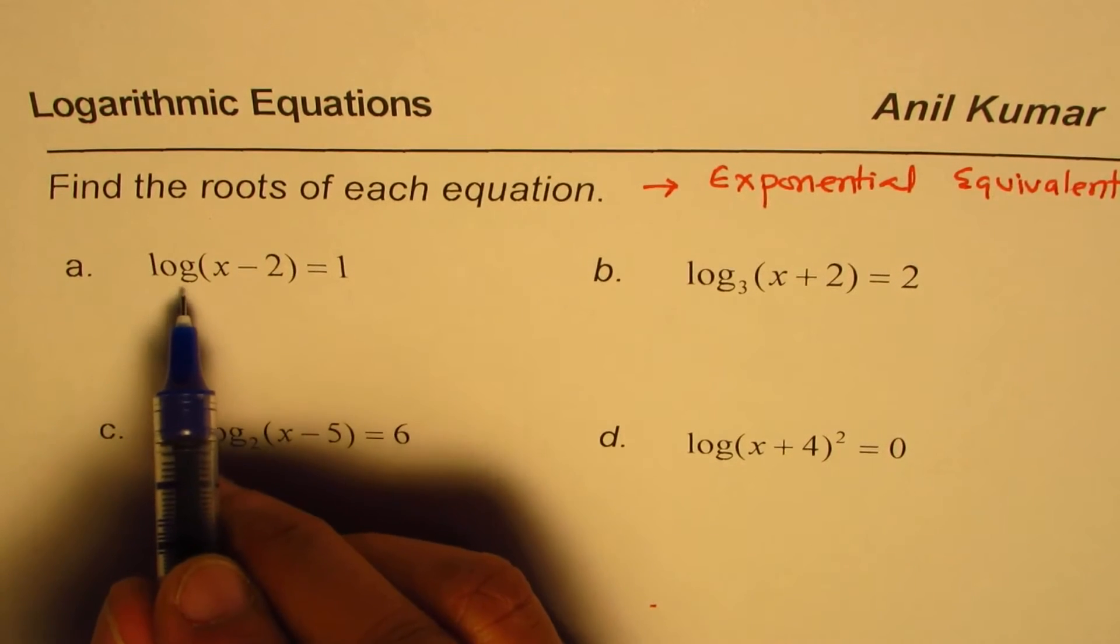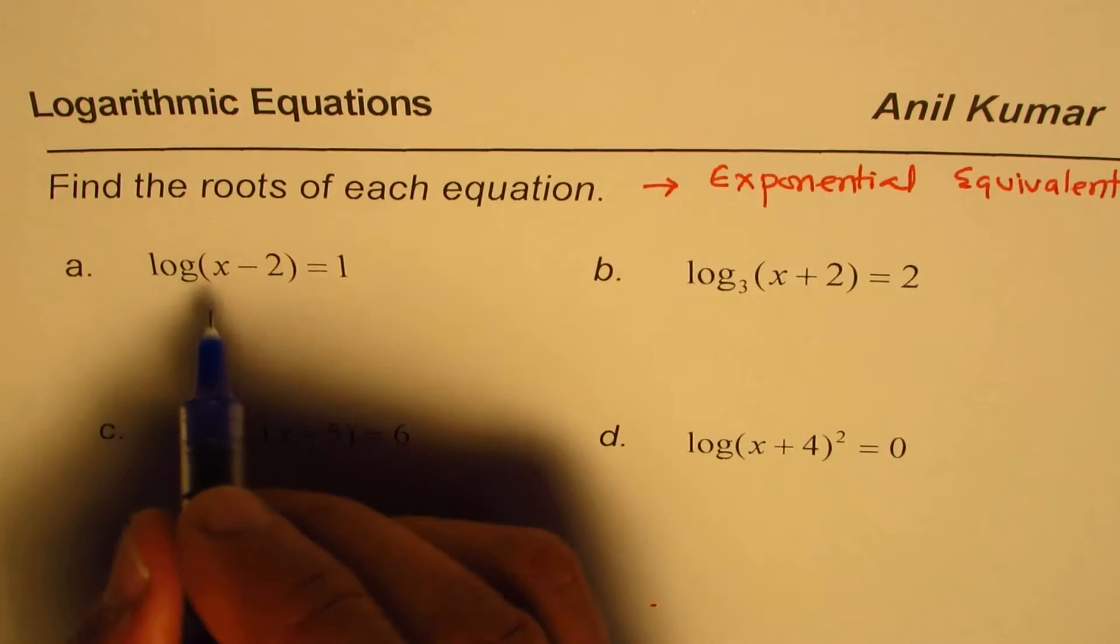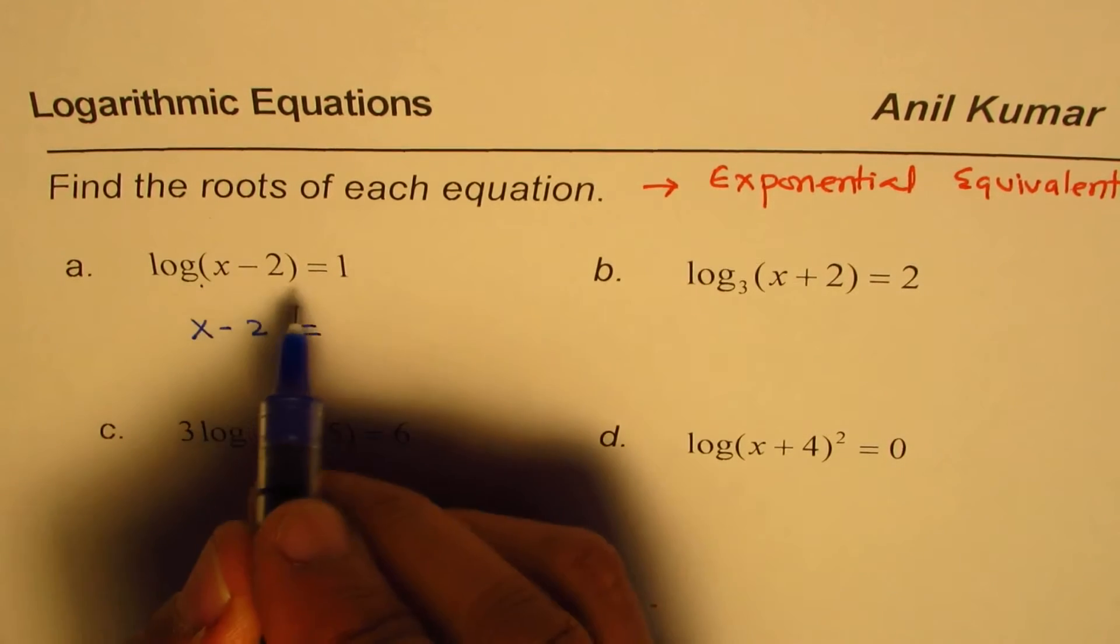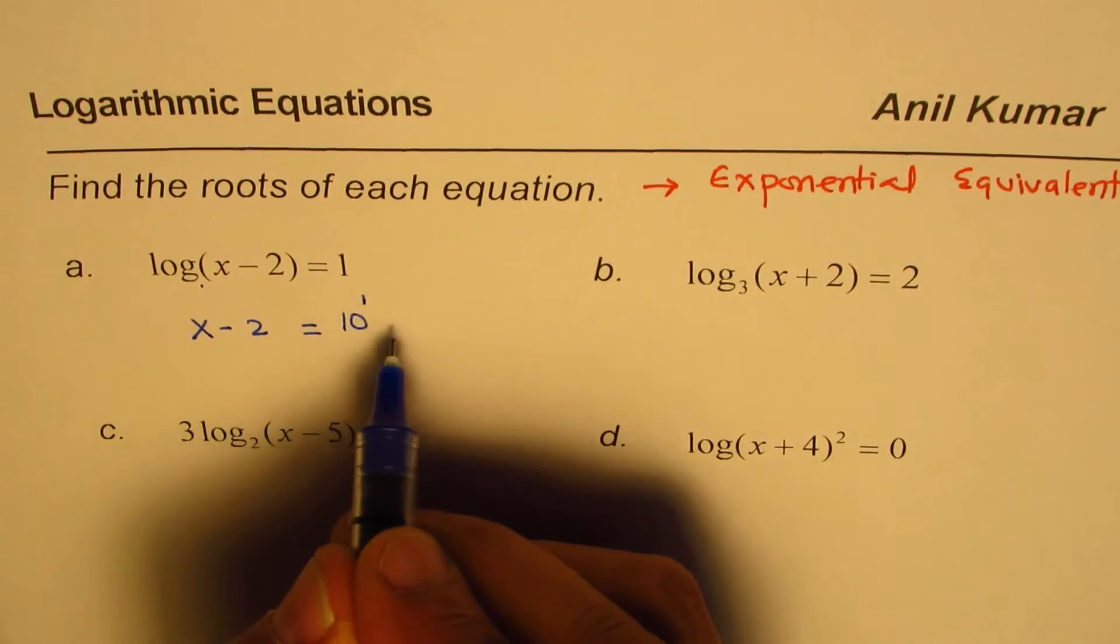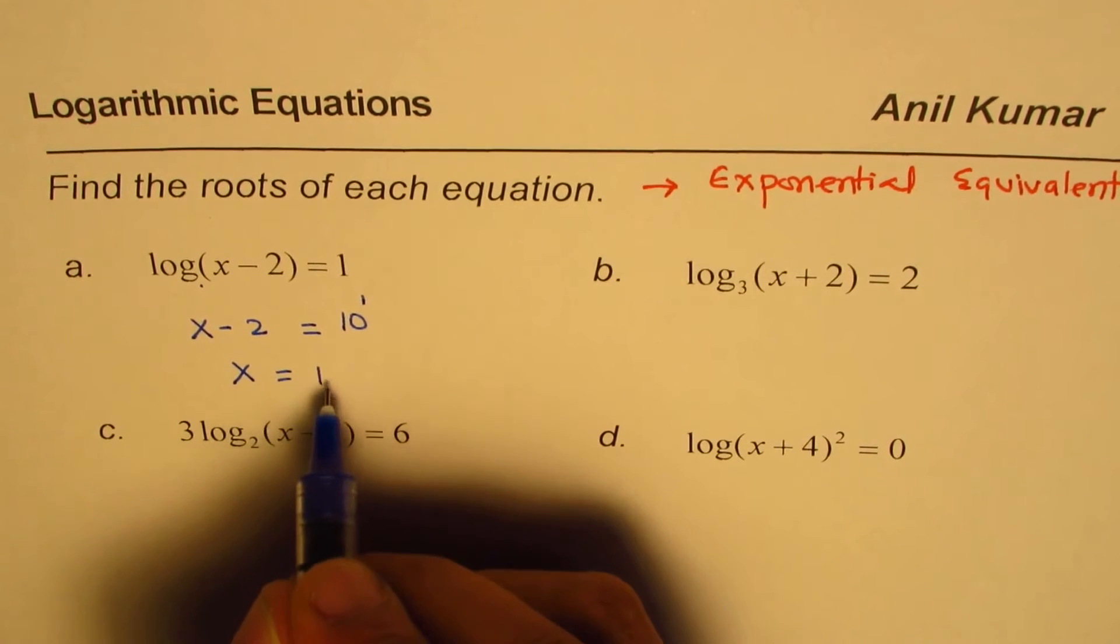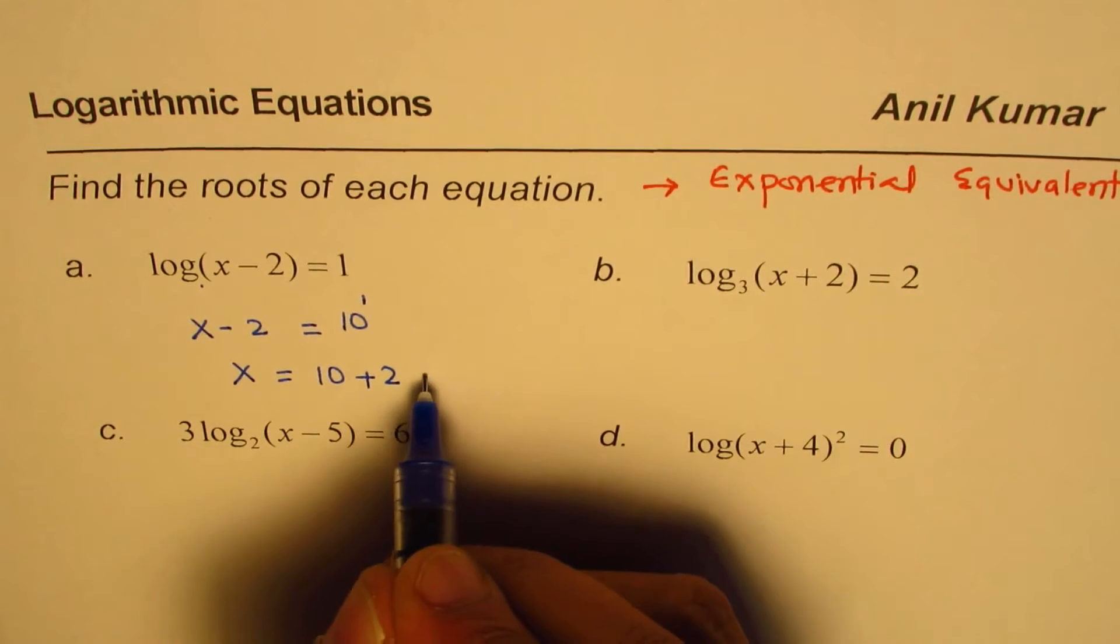When log to the base 10 of x minus 2 is 1, then x minus 2 equals 10 to the power of 1, which is 10. Therefore, we get x equals 10 plus 2, which is 12.